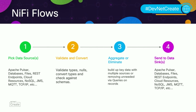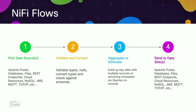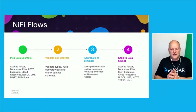You pick a data source — it could be a Pulsar topic, a relational database, a file, a REST endpoint, anything from cloud resources, a NoSQL store, JMS, all these different message queues and networks. Easiest to start with one. I grab a file from a file system, then I validate it, do any kind of conversions, enrichment, check against schemas, get it in a format that's ready to transport, and then sometimes aggregate it or drop some fields — that's kind of an optional step.